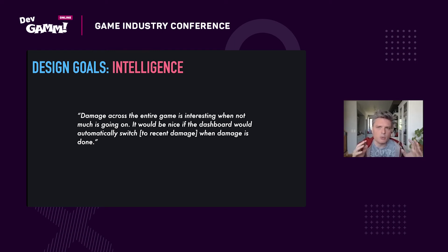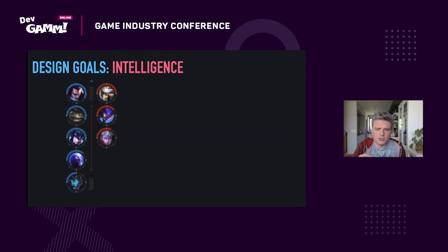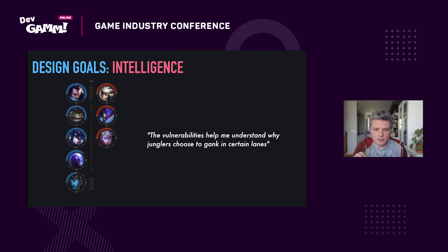When we talk about intelligence, we can also talk about using the data to make predictions. We see the vulnerability of each player — the top ones are most vulnerable, the bottom ones least vulnerable. We calculate that and show spectators which players are in danger. One participant said the vulnerability widget helped them understand why certain junglers choose to gank a specific lane.